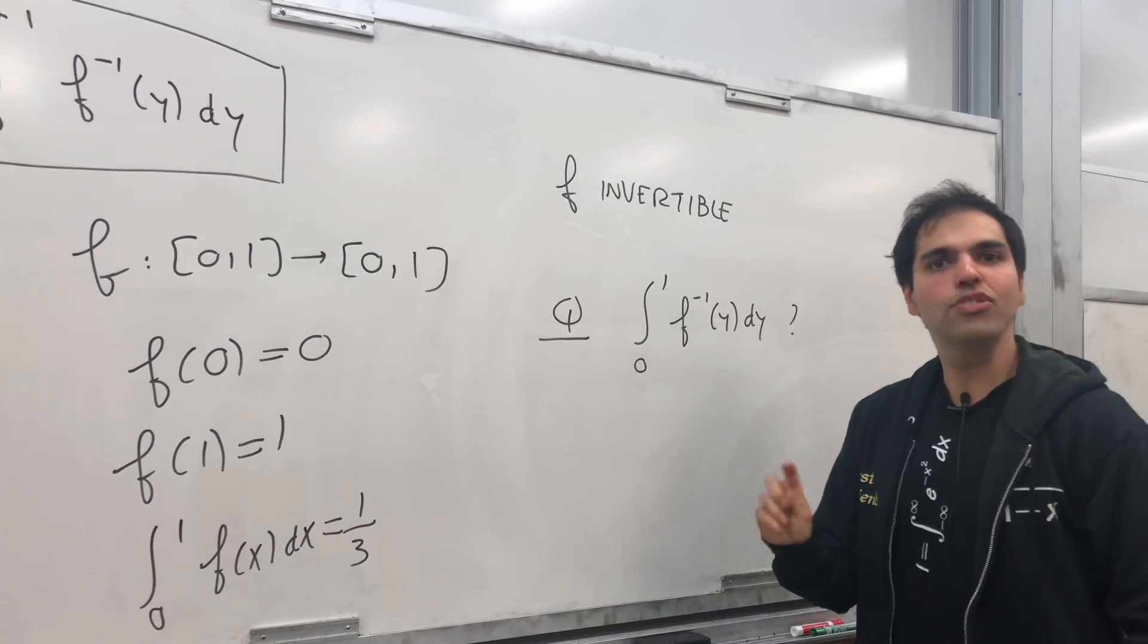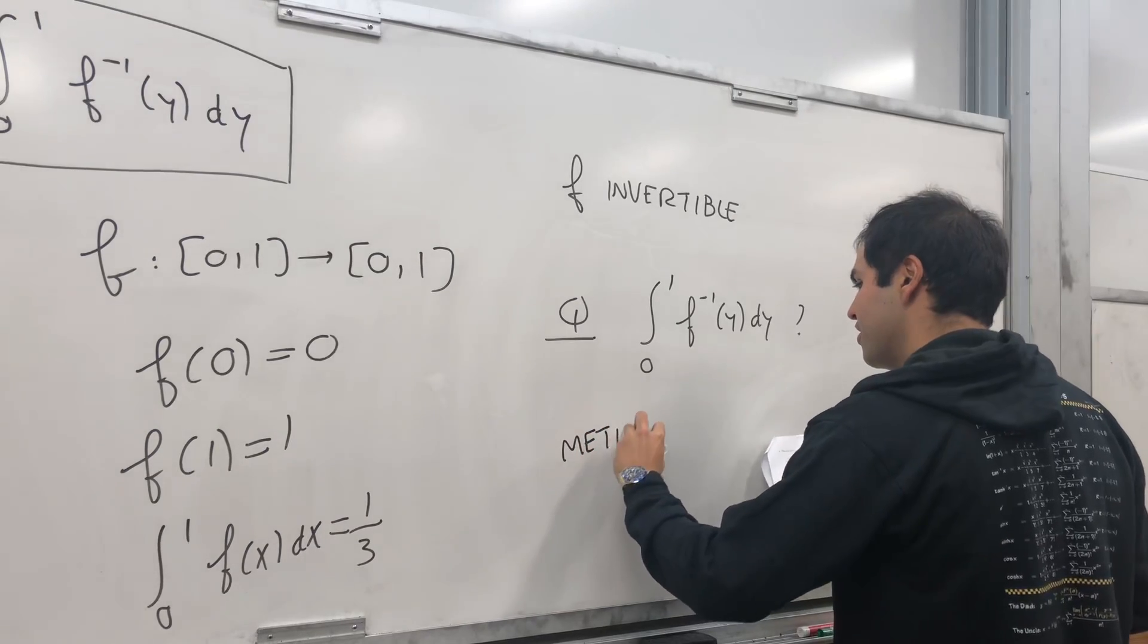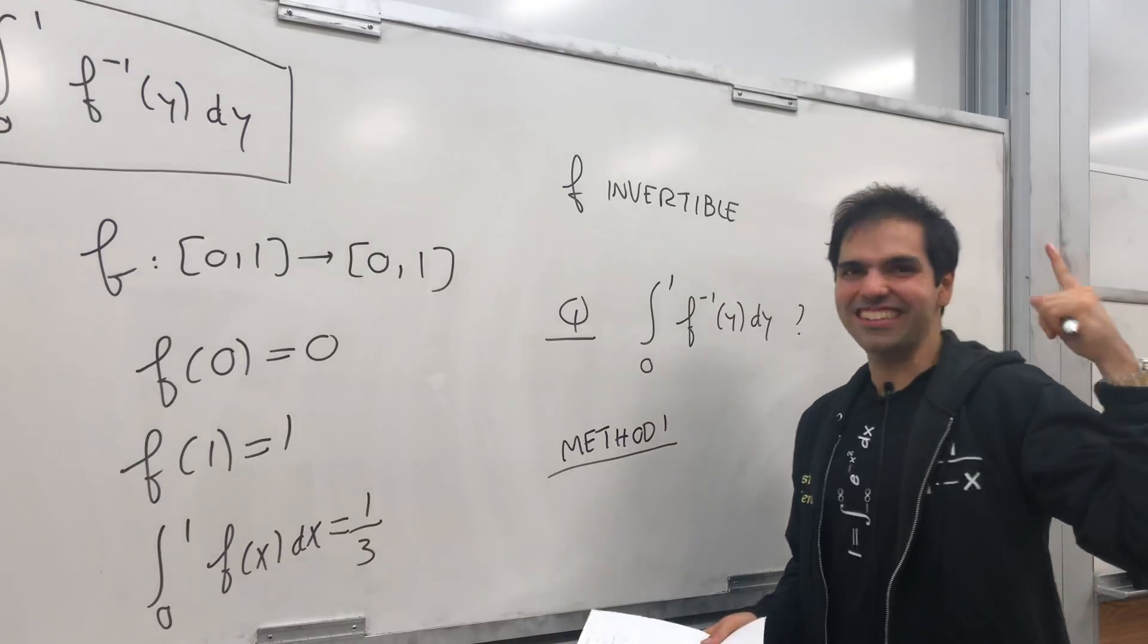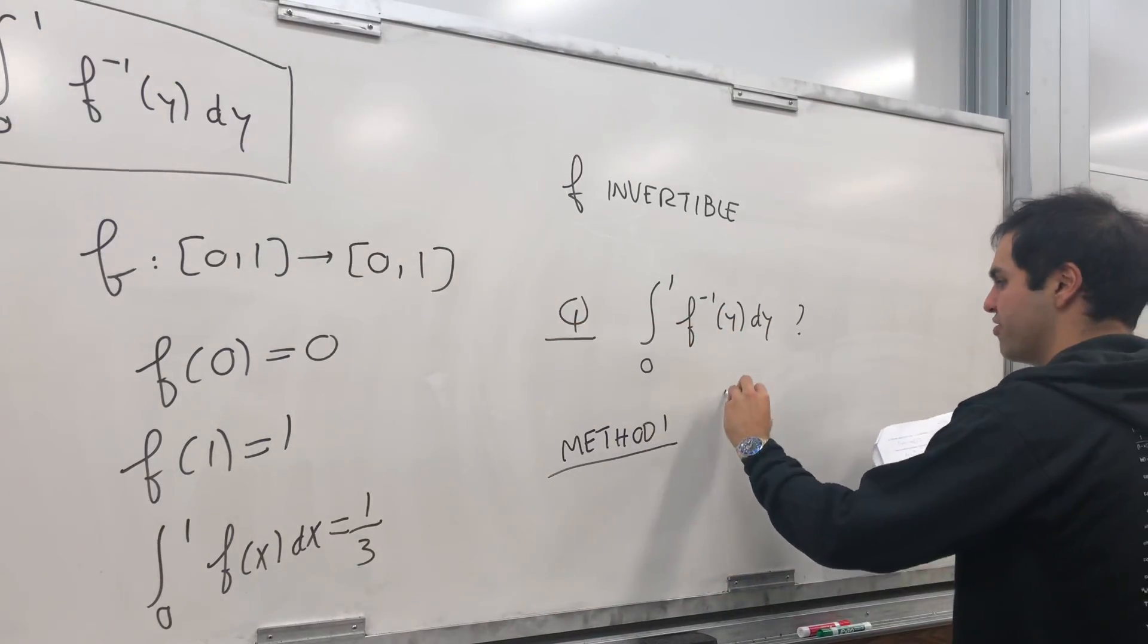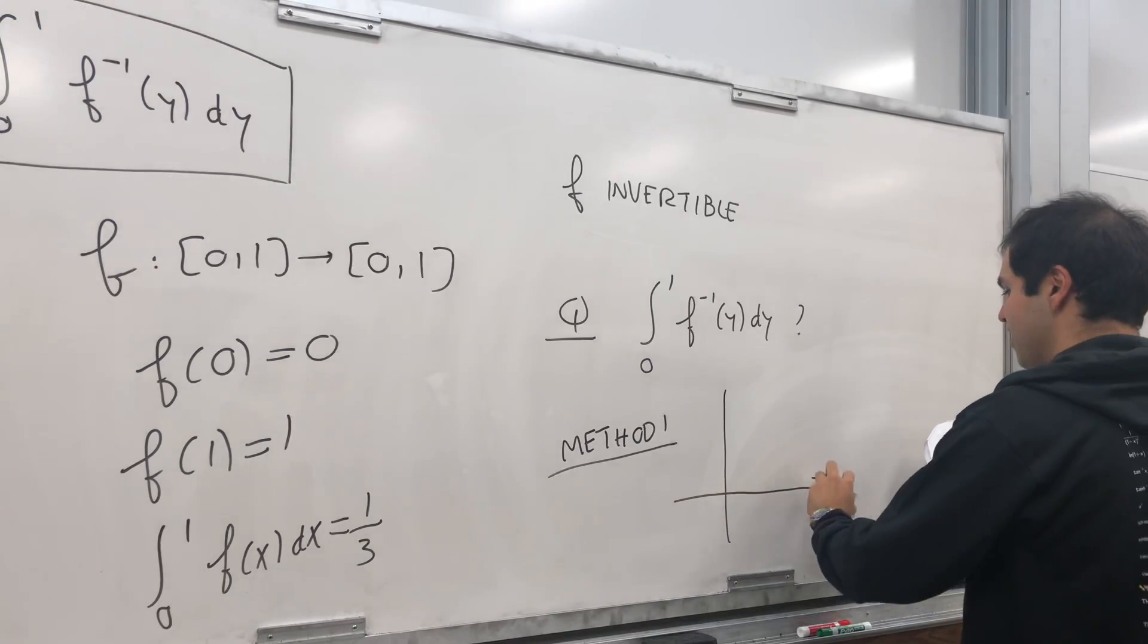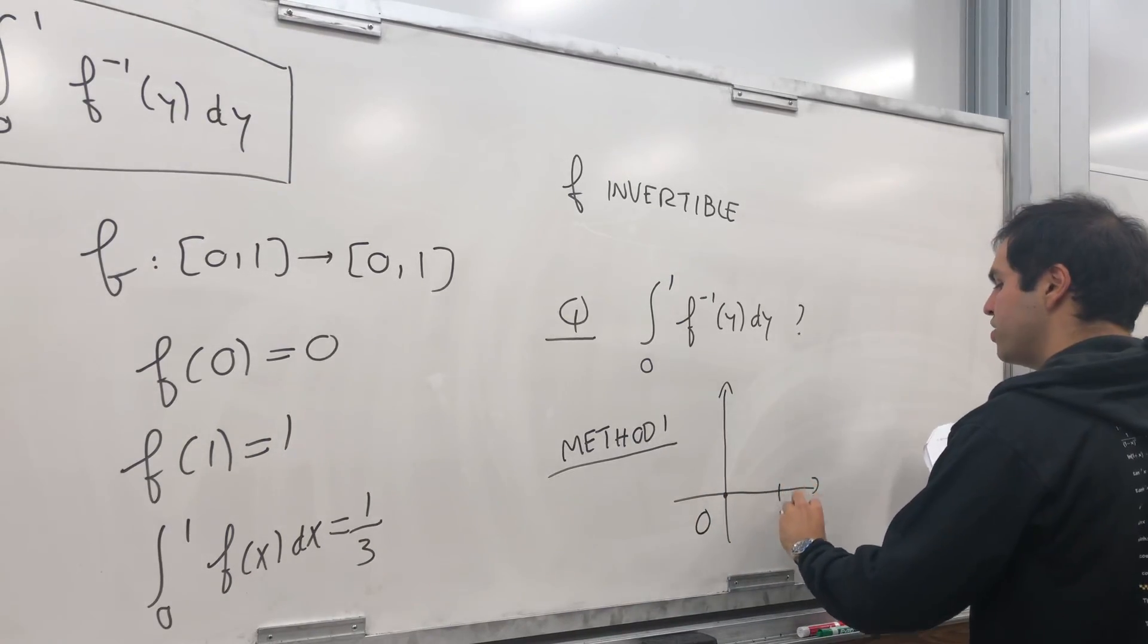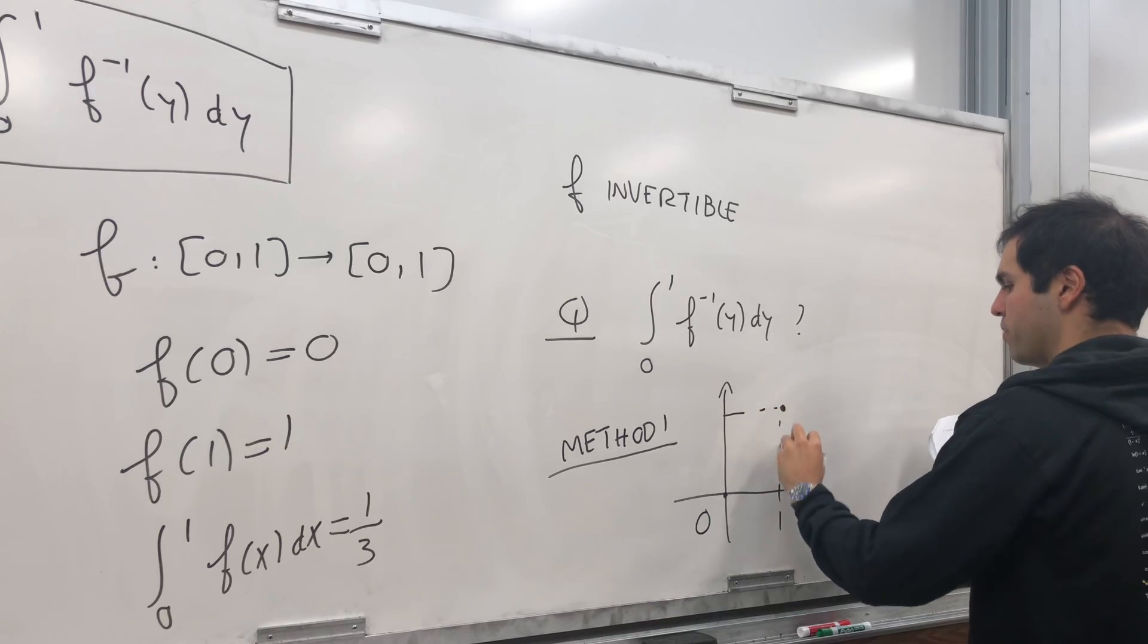Let me first give you the geometric method of doing it. Method one, I like to call it the Nike method because just do it! Namely, let's draw a picture of such a function. So we know that f(0) equals 0, f(1) equals 1, something like that.